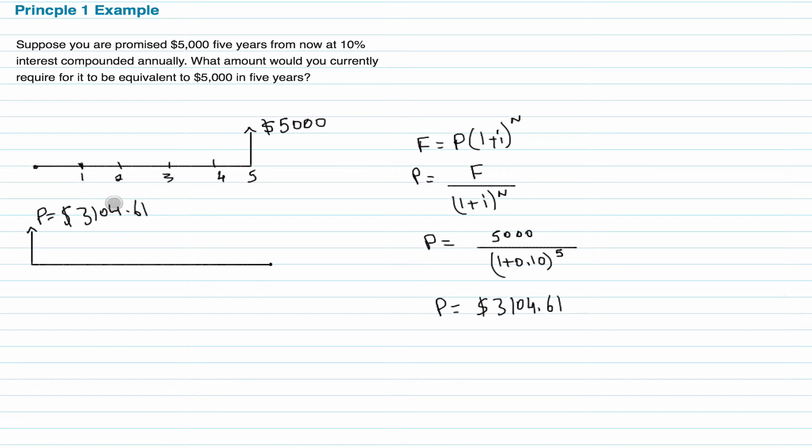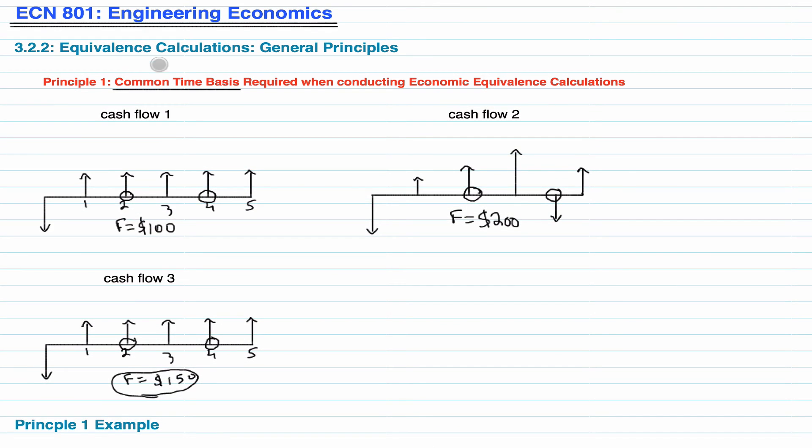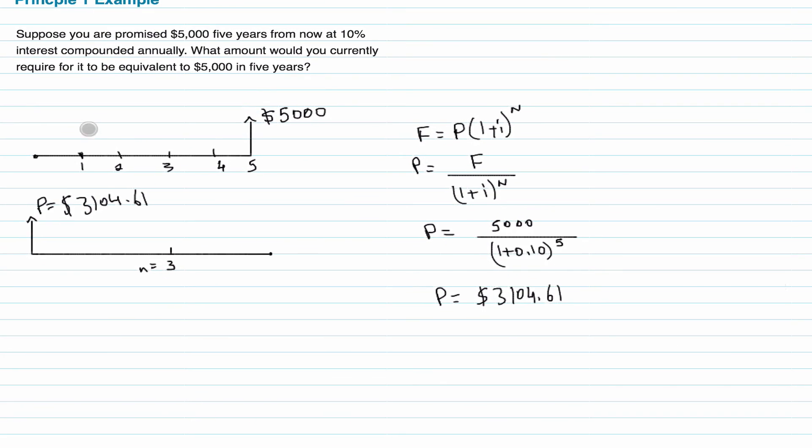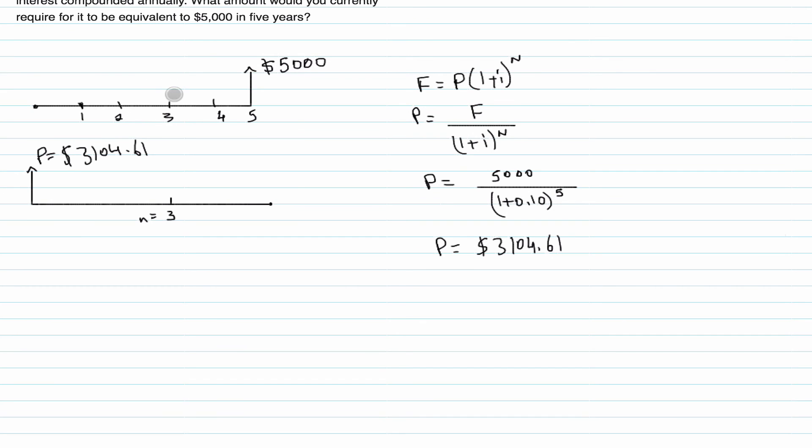Now, the next question is, what is the amount or the future worth at period number 3? When n equals to 3, what is the present value, or what does this value turn into 3 years from now? And what does this $5,000 future value, future worth, turn into in the third period? And we are going to check whether it's equivalent, because we want to know if this concept of economic equivalence works. Because they're the same cash flow. So they should be equal to each other.